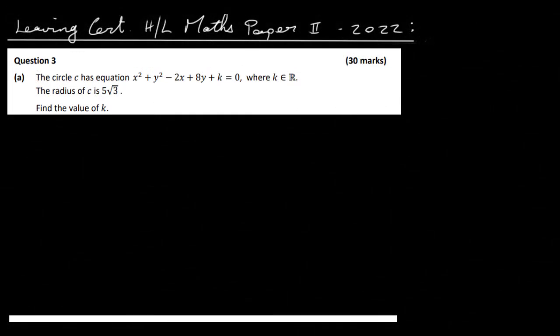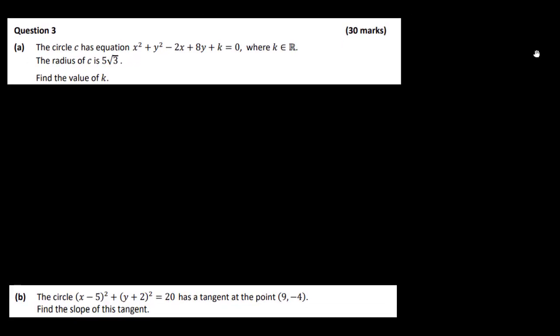Let's have a look at the Leaving Cert Higher Level Maths Paper 2 for 2022, and this is question 3, part A. The circle C has equation x squared plus y squared minus 2x plus 8y plus k equals 0, where k is an element of ℝ. The radius of C is 5 root 3. Find the value of k.